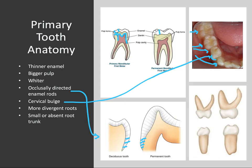The roots of primary teeth are more divergent. You can appreciate in the drawings how the roots diverge quite a bit more than they do in permanent teeth, which tend to be more parallel or even convergent. There is also a small or absent root trunk — that's the area between the CEJ and the bifurcation of the tooth — which in primary teeth is a lot smaller or absent altogether.